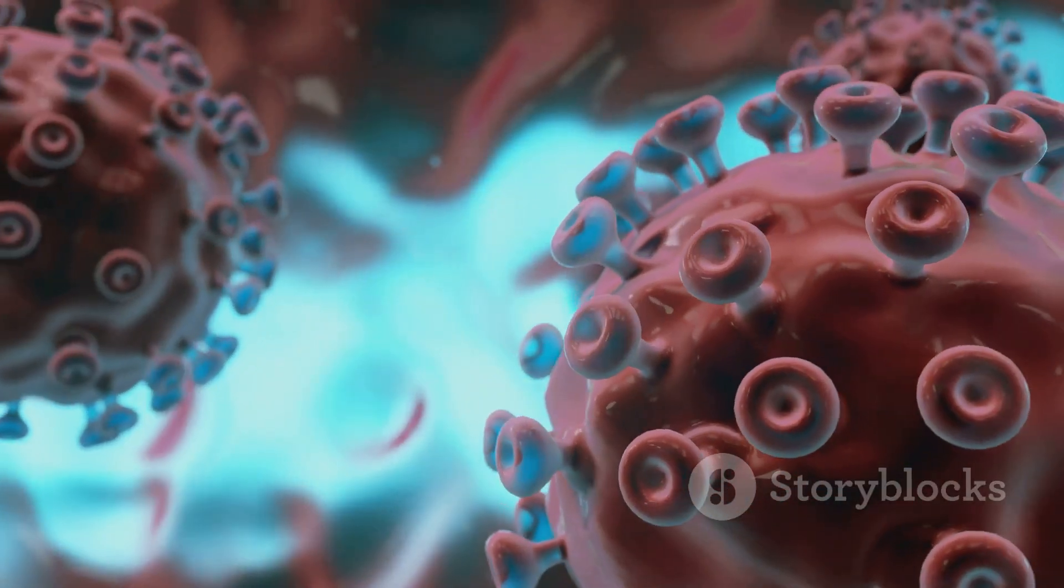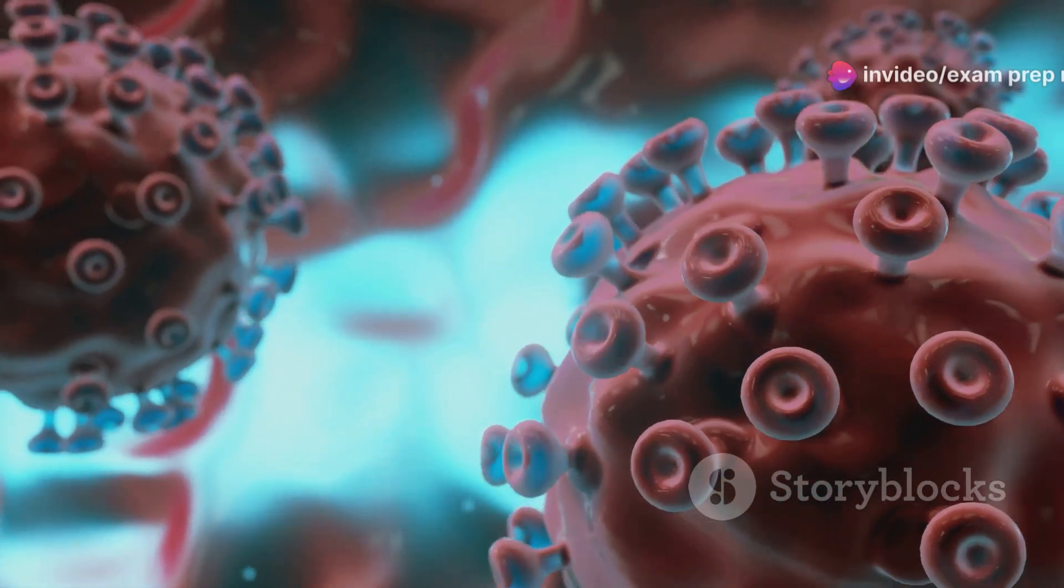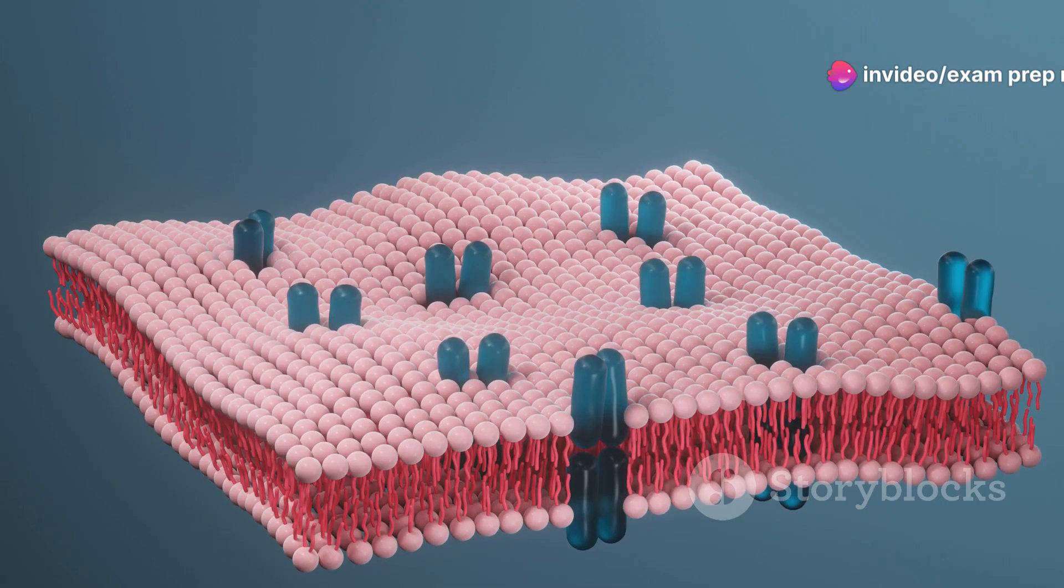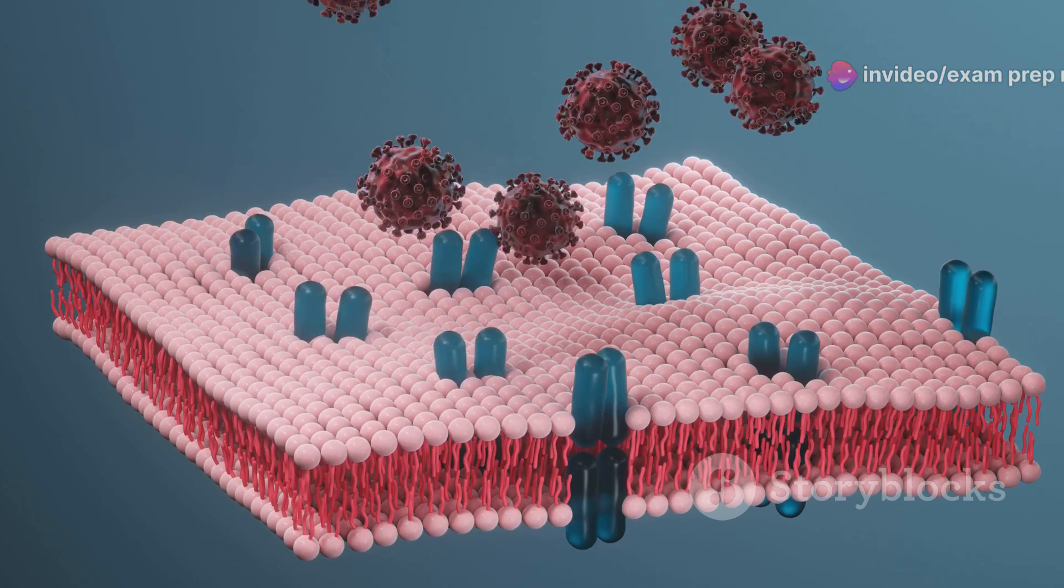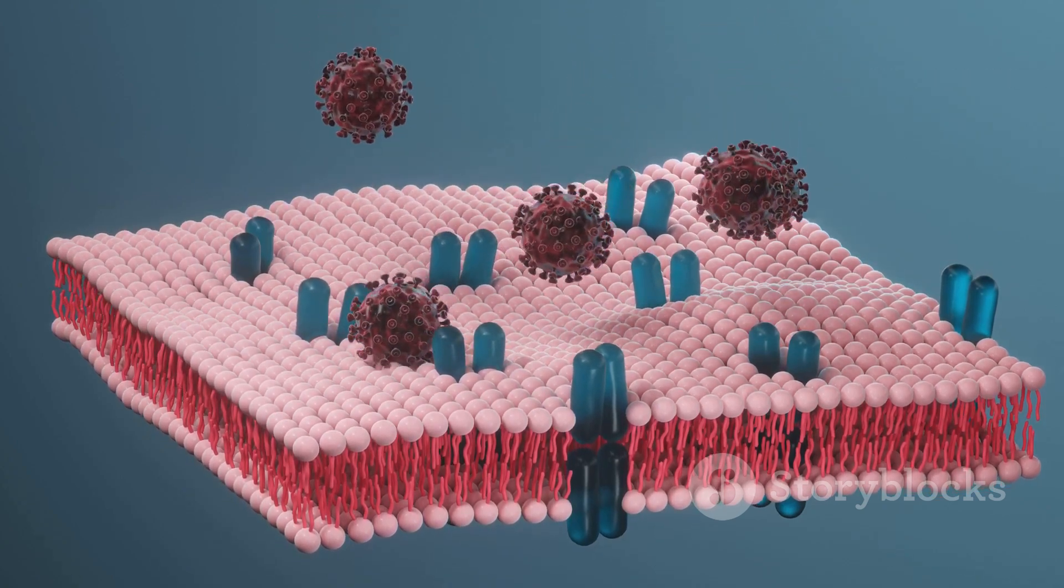This genetic material is encased within a protein coat called a capsid. Some viruses have an additional outer layer called an envelope, derived from the host cell's membrane as the virus buds out.